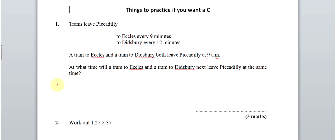So we've got our Eccles tram and we've got our Didsbury tram and they both leave at 9am. So let's just have a look. So Eccles every 9 minutes. So that's 9:09, 9:18, 9:27, 9:36, 9:45, 9:54 and so on. Let's just do the other one. This goes every 12 minutes. 9:12, 9:24, 9:36 and I'm going to stop there because I've noticed that 9:36 is a good time.